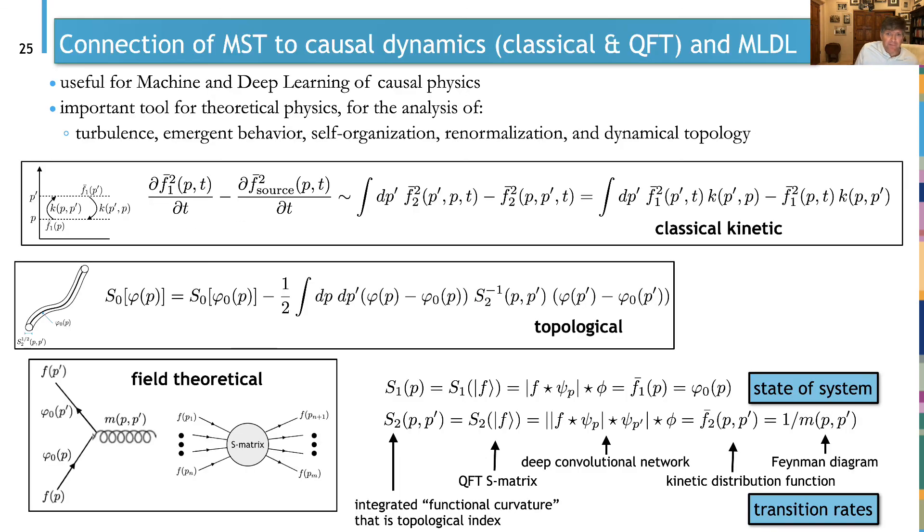This scattering transformation has an efficient implementation with Python using Keras and TensorFlow that can be found at this link. And finally, in summary, we've shown you this deep convolutional network that Stefan came up with and its interpretation in terms of classical kinetics, field theory, and topology of the dynamical manifold. Thank you very much.